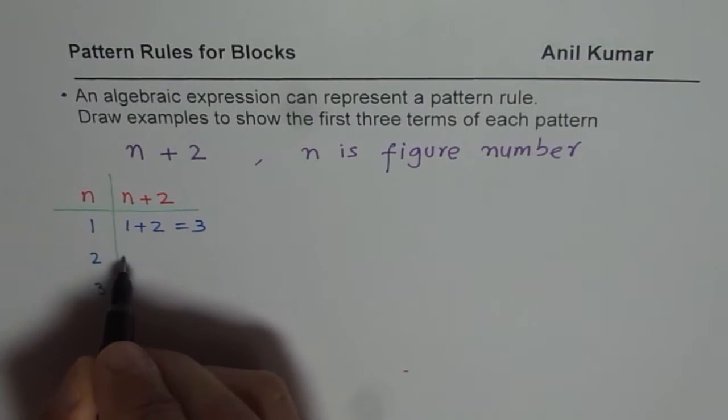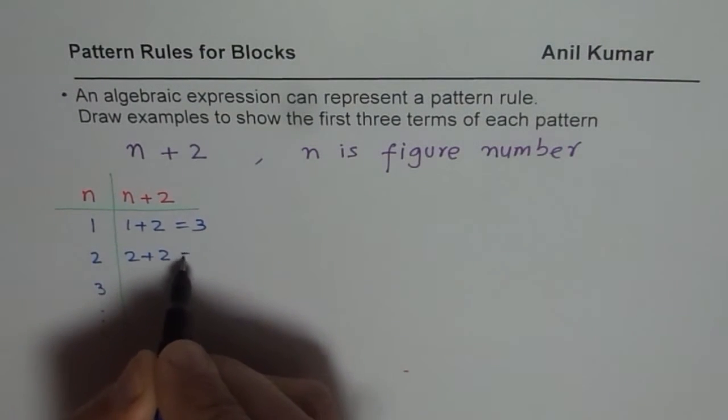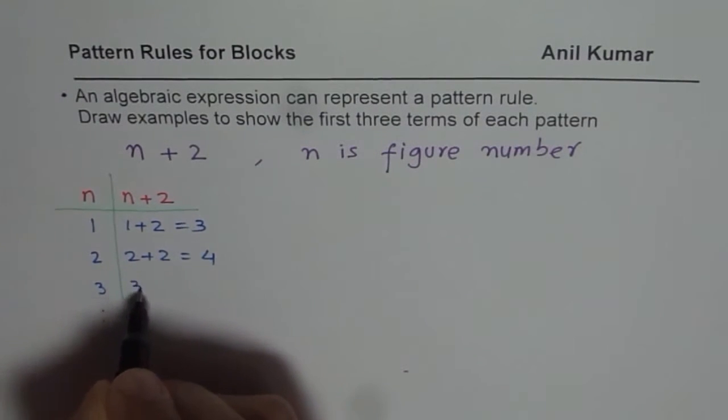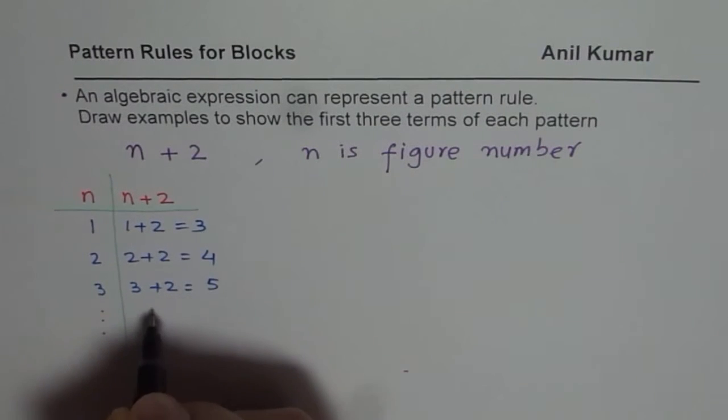How about when n is 2? Then we have 2 plus 2, that is 4. When I write n as 3, that means figure number 3, that should have 3 plus 2, 5 blocks.